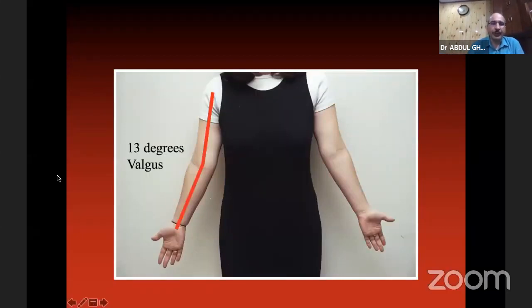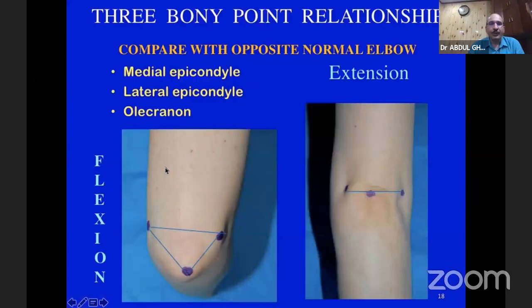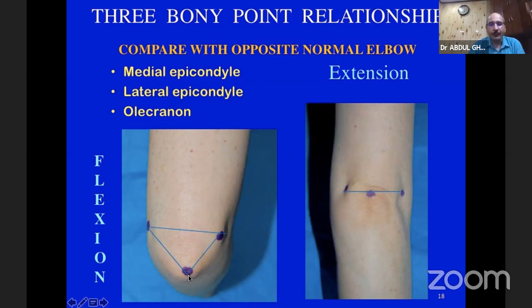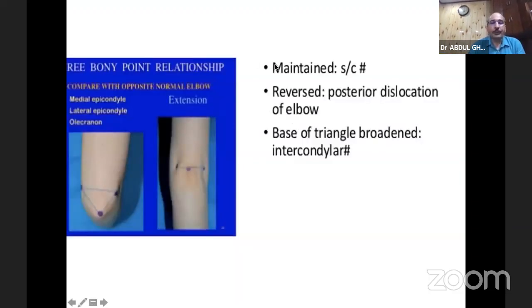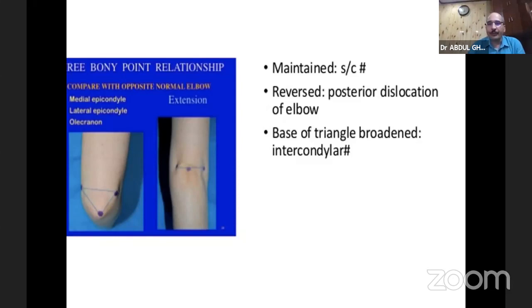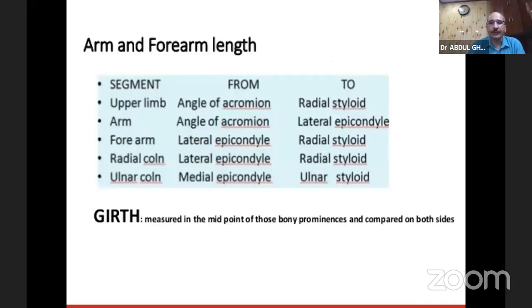For the three-point bony triangle: mark the medial epicondyle, lateral epicondyle, and tip of olecranon. In full extension it forms a straight line; at 90 degrees it becomes an isosceles triangle. This is maintained in supracondylar fracture; the apex becomes posterior in posterior dislocation of elbow because the olecranon tip moves; the base broadens in intercondylar fracture; and it is disturbed in lateral condyle fracture.